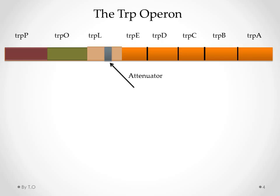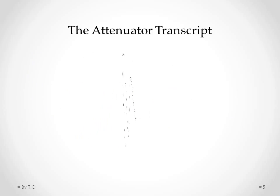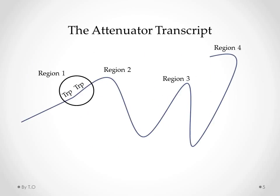Inside the leader region is an attenuator. The attenuator includes a transcript with four regions. The transcript has been made by RNA polymerase. Region 1 is particularly important — it contains two TRIP codons that determine the rate at which the ribosome translates. Each region can complementary base pair with each other because they are palindromic.